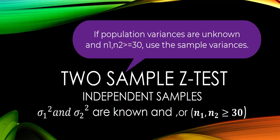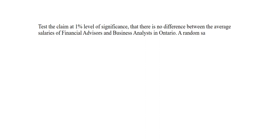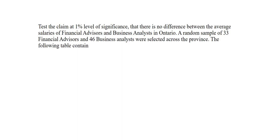If the population variances are unknown but the sample sizes are large, we can use the sample variances in place of the population variances. We will look at the following example. Test the claim at 1% level of significance that there is no difference between the average salaries of financial advisors and business analysts in Ontario. A random sample of 33 financial advisors and 46 business analysts were selected across the whole province. The following table contains means from both samples and the population standard deviations.